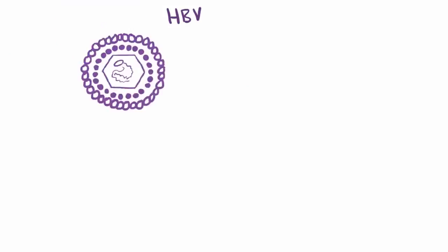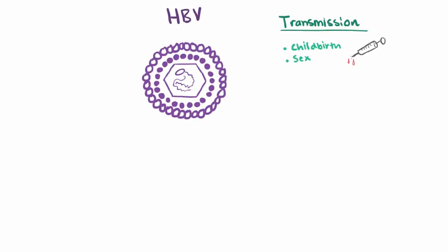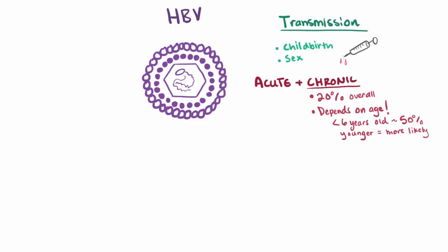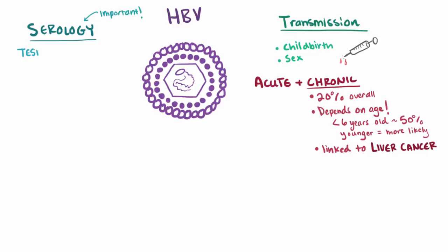On to hepatitis B. HBV is contracted via the blood — the same routes like childbirth, unprotected sex, and others. HBV only moves on to chronic hepatitis in 20% of cases overall, but it also depends on the age of infection. Children less than 6 years old are most likely to get chronic infections — about 50% — and that percentage increases the younger they are. Chronic HBV is also known to be linked to liver cancer. We can use a variety of testing methods like PCR to look for certain markers, especially the HBV antigens, and the presence or absence of each at different time points can tell us different things.